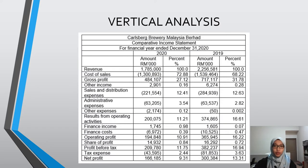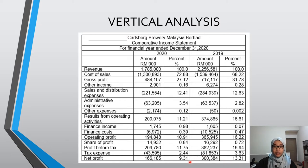For Carlsberg Brewery Malaysia Berhad, I'm also using revenue as the key figure. The gross profit was 27.12% of revenue in 2020, while it was 31.78% in 2019. For net profit, 13.31% of revenue resulted in net profit in 2019, while only 9.31% resulted in net profit in 2020. We can say that Carlsberg gained more profit in 2019 compared to 2020.